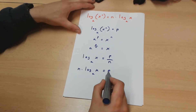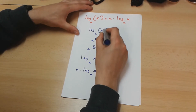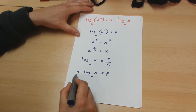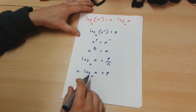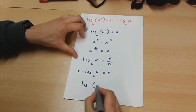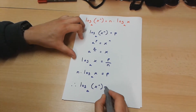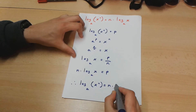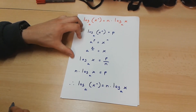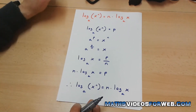Now, we know that p is equal to the logarithm of x to the power of n to the base a, but it's also equal to this value over here. Therefore, the logarithm of x to the power of n to the base a is equal to n multiplied by the logarithm of x to the base a. And here is our proof. Thanks for watching.